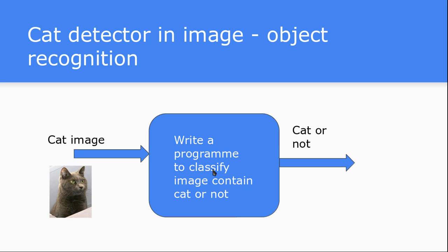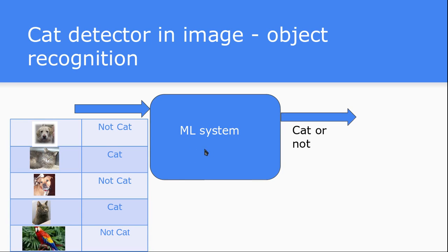Let's see how a machine learning system solves this problem. Instead of giving just a single cat photo and writing a computer program, what we give the machine learning system is a lot of photos of either cats or non-cats. For example, this is not a cat photo, this is a cat photo, this is not a cat, this is a cat, this is a parrot so it's not a cat. The machine learning system will automatically come up with some generic rule and eventually a model that tells whether the photo is a cat or not. This way, a machine learning system is a kind of training and testing system.